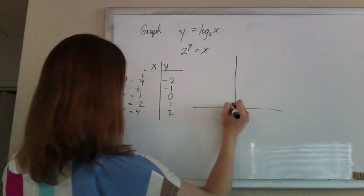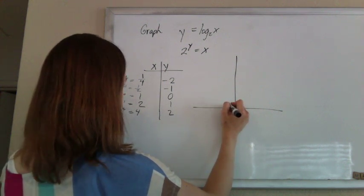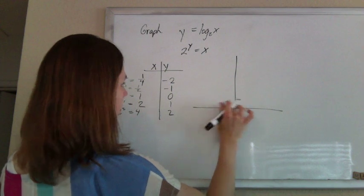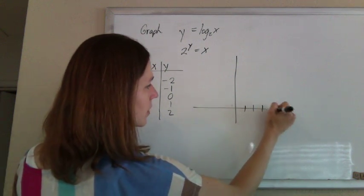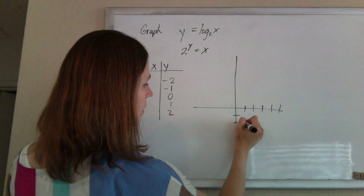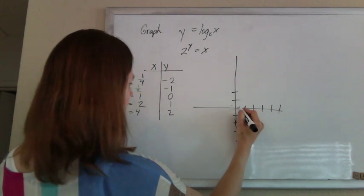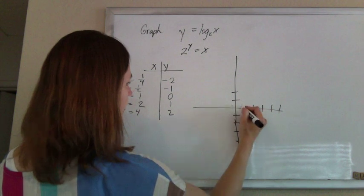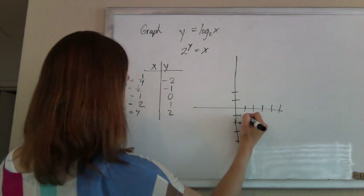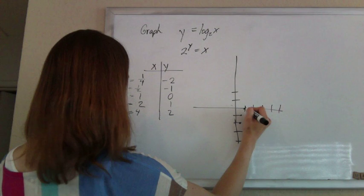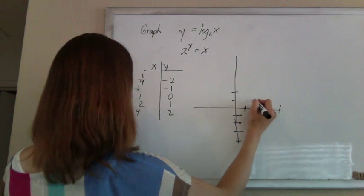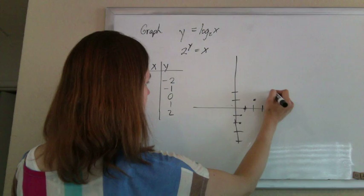you'd get when x is 1 fourth, y is negative 2, when x is 1 half, y is negative 1. When x is 1, y is 0, when x is 2, y is 1, when x is 4, y is 2.